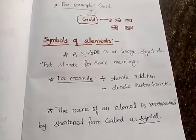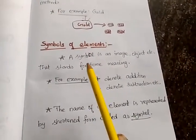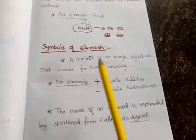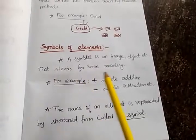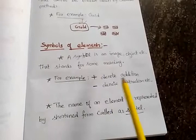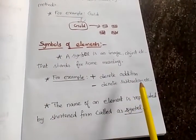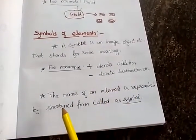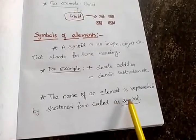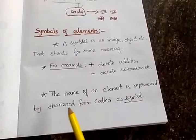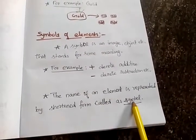Now let's see the symbols of elements. A symbol is an image or object that stands for some meaning — for example, plus denotes addition and minus denotes subtraction. The name of an element is represented by a shortened form called its symbol.